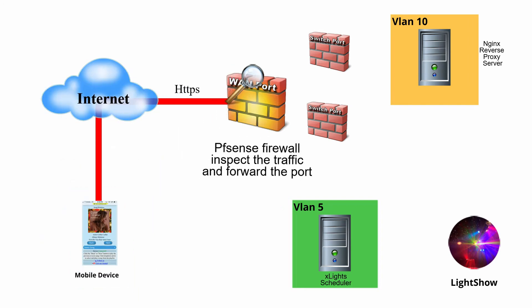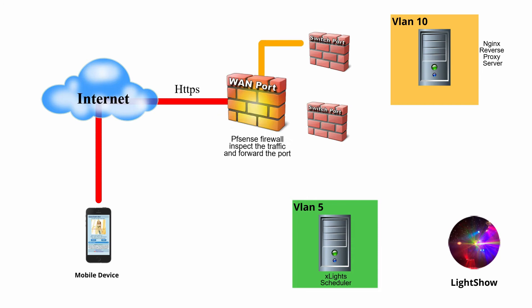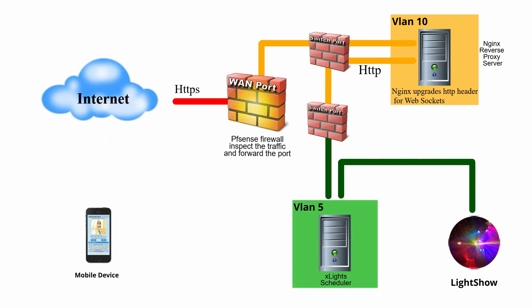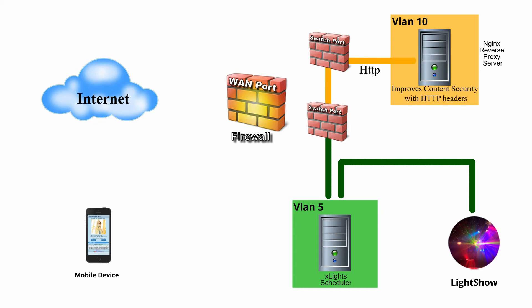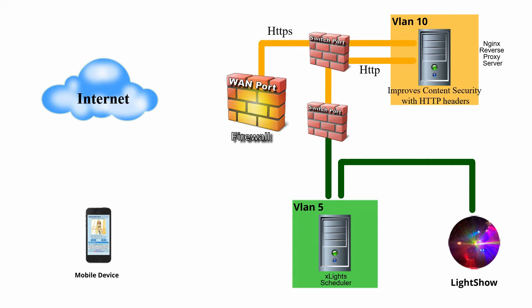This final option presents the user with a domain name that resolves to the firewall. Packets are filtered and inspected using PFBlocker and SNORT, then routed to the NGINX reverse proxy server on VLAN 10 using a secure connection. The proxy server receives and terminates the SSL connection, then relays the request to the X-Lite scheduler on VLAN 5. The X-Lite scheduler responds to the proxy server, which then adds response headers before encrypting the message and sending it back to the user. As in the previous connection scenarios, the reverse proxy server shelters the X-Lite scheduler from direct attacks.